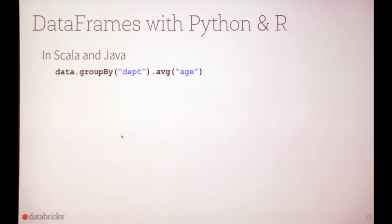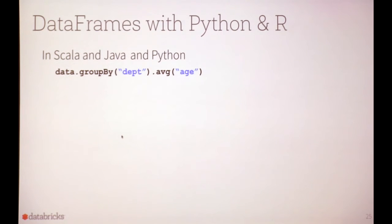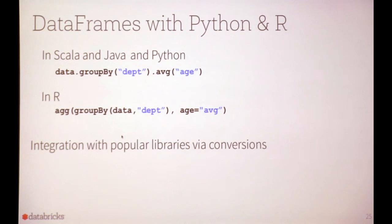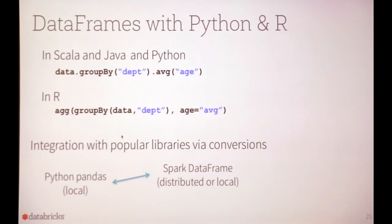For DataFrames with Python and R, we try to have similar APIs among languages. R is a bit different so we try to make the DataFrame API familiar to people who have used R DataFrames. We also provide integrations via conversions: if you have a Spark DataFrame — distributed or local — with a single call you can convert to and from Python pandas or a local R DataFrame.